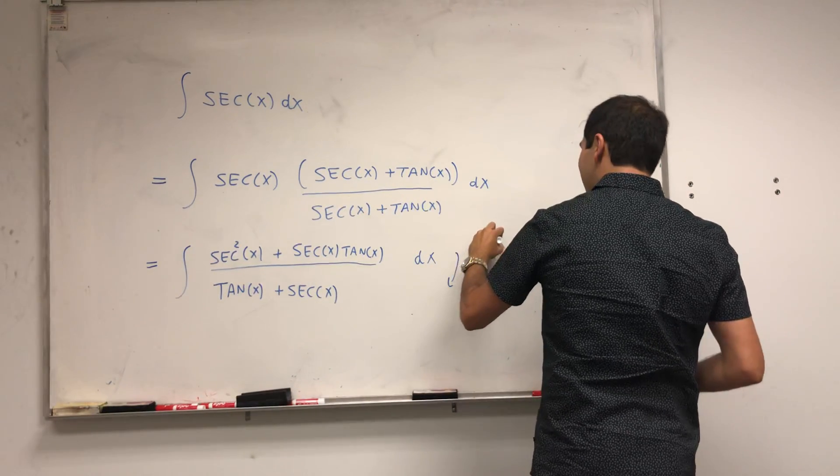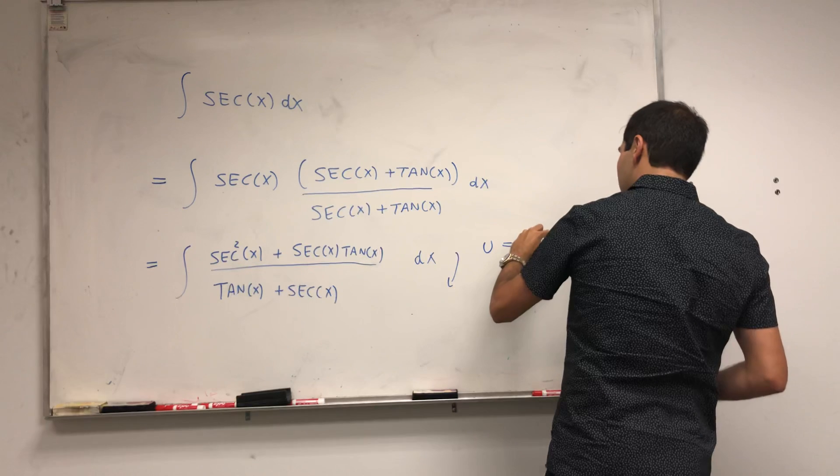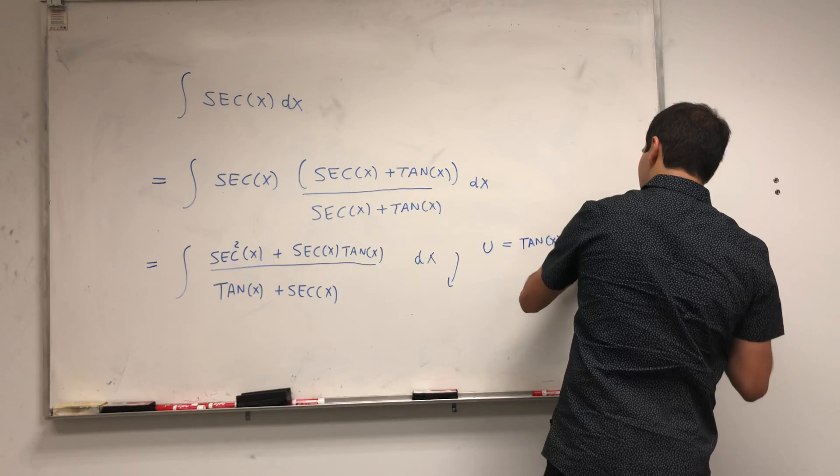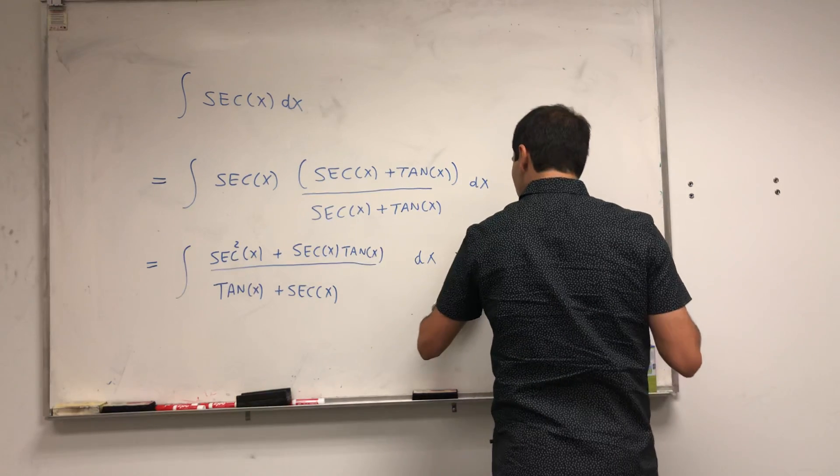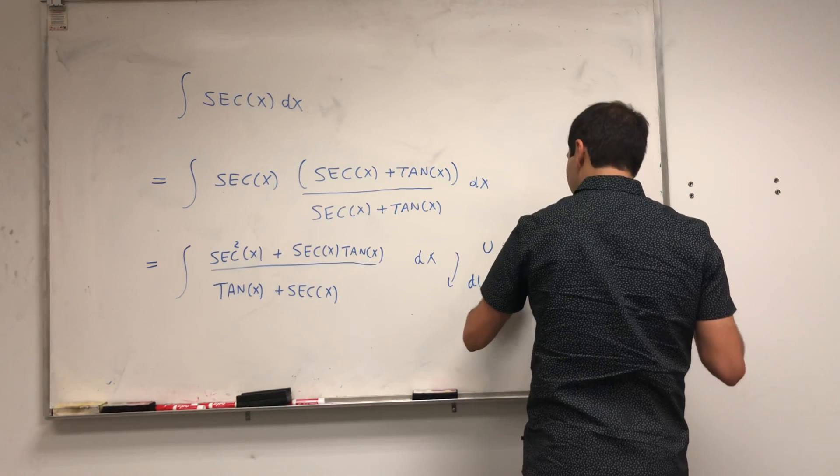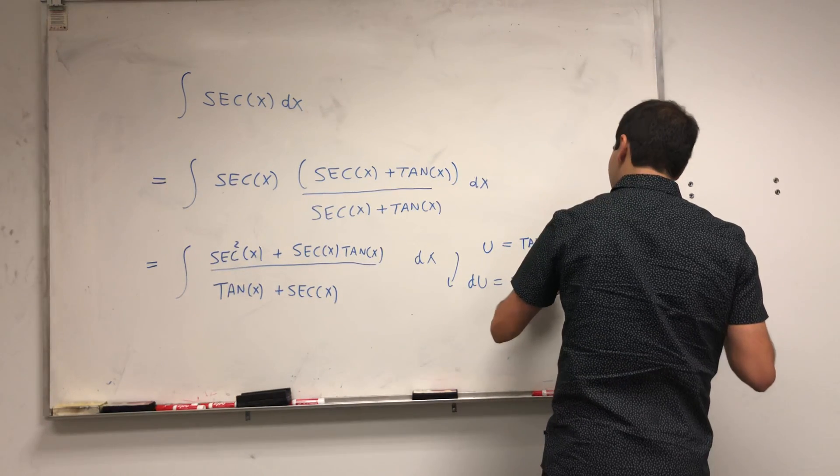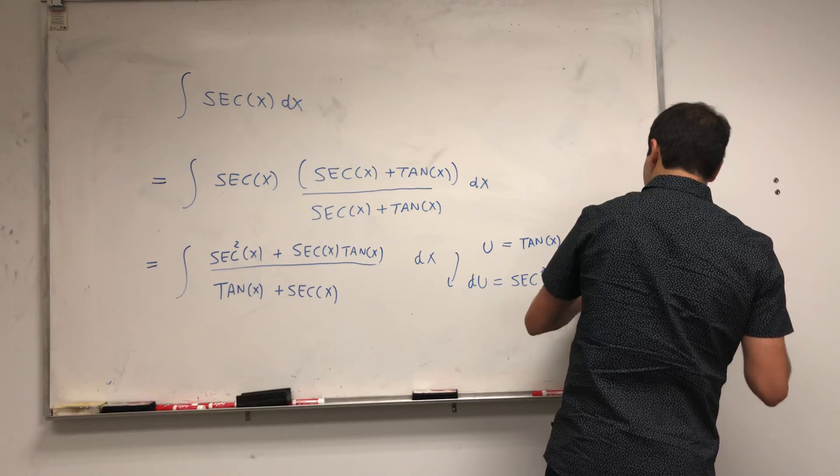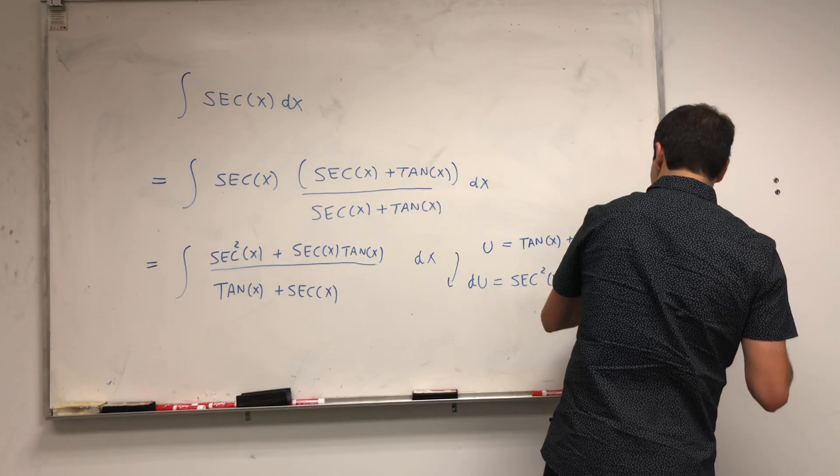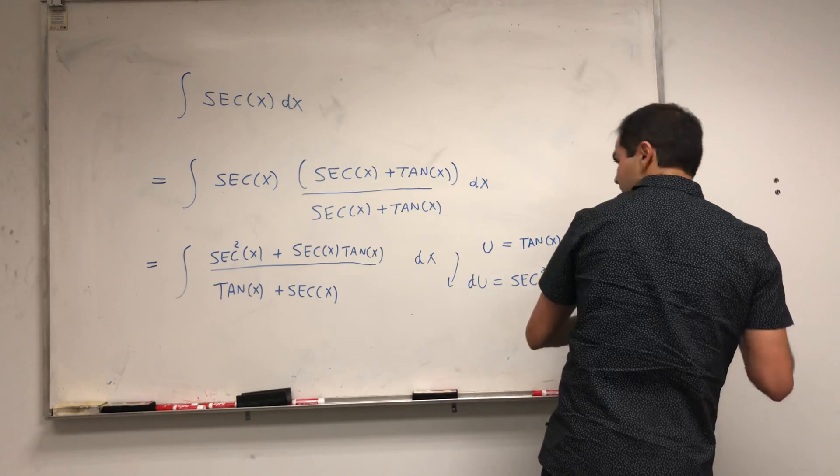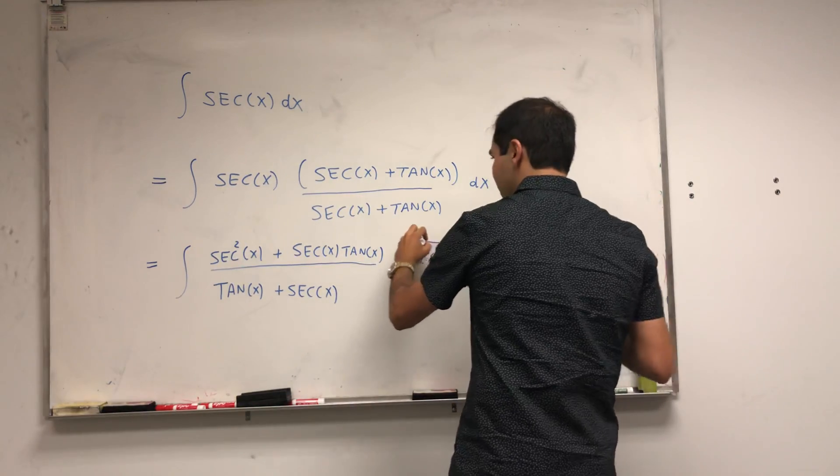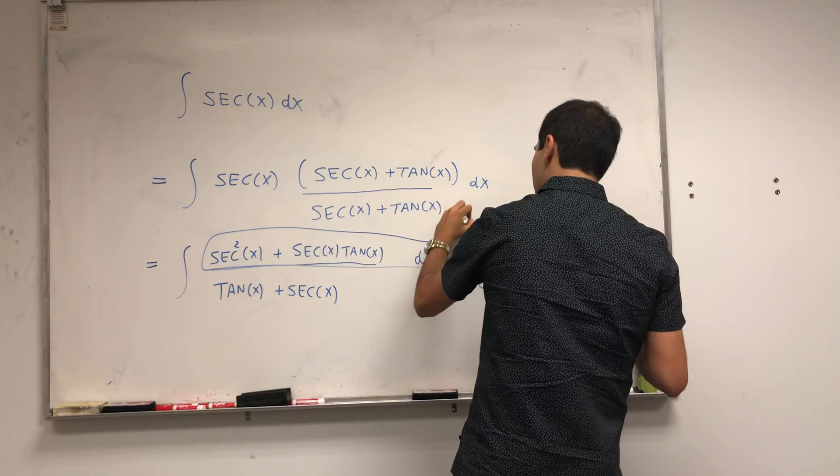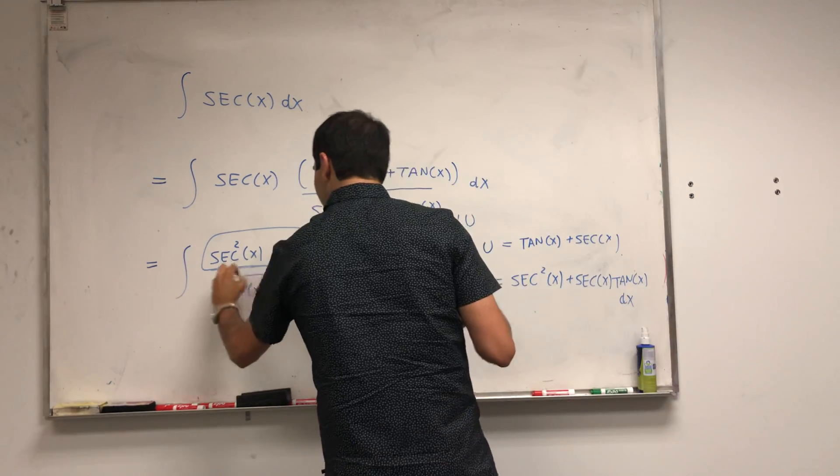So, let u be the denominator. Tangent of x plus secant of x. Then, in fact, du becomes the numerator. Secant squared of x plus secant of x tangent of x. Which means that this numerator here becomes du, and the denominator is just u.